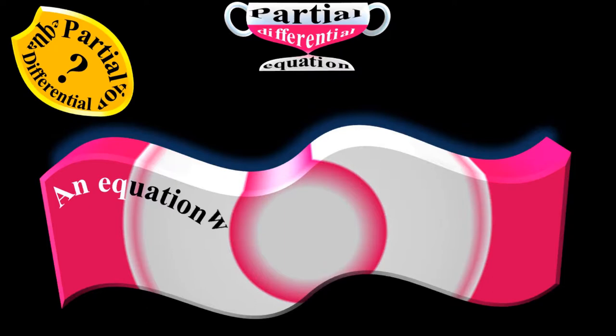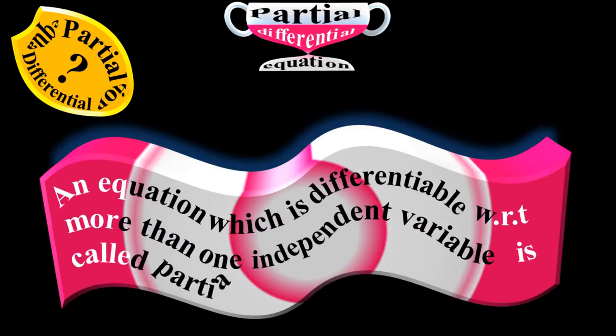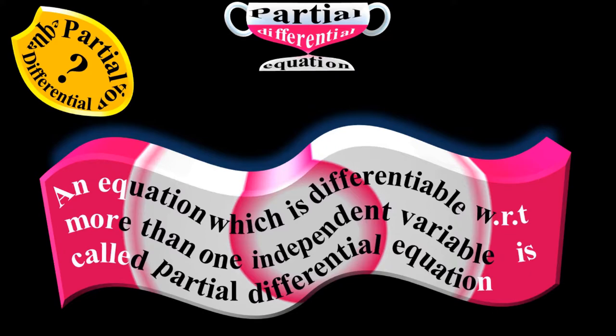Partial differential equation. What is a partial differential equation? An equation which is differentiable with respect to more than one independent variable is called a partial differential equation. The process to differentiate a partial differential equation is called partial differentiation or partial derivative.